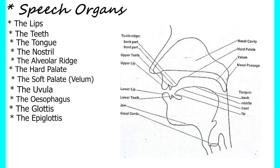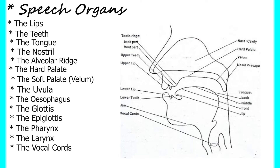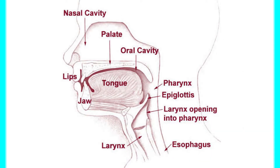the epiglottis, pharynx, larynx, vocal cords, and even the lungs. Also note that the oral cavity is involved when you make use of the mouth, and the nasal cavity is involved when you make use of the nose.